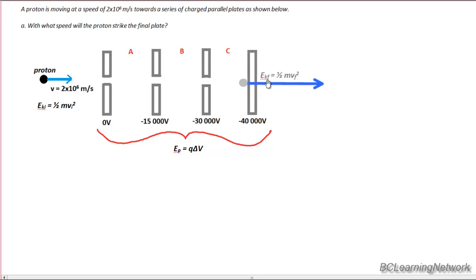So all it will have at the end is kinetic energy just before it strikes the plate. So according to our work energy principle, our initial kinetic energy plus the change in potential energy as it accelerates between the plates gives us our final kinetic energy.